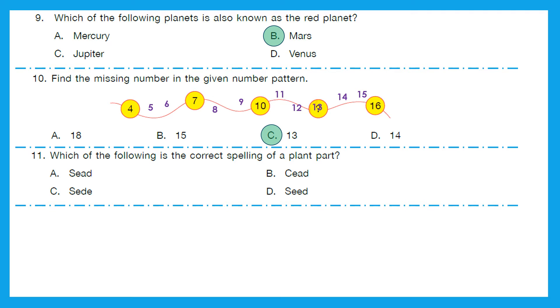Question 11: Which of the following is the correct spelling of a plant part? And it looks like that they are talking about seed. So the right spelling of seed is S-E-E-D, seed. Option D is the right answer.